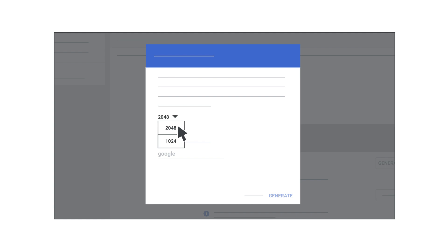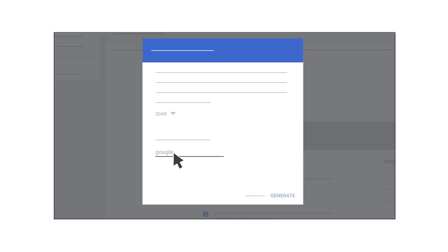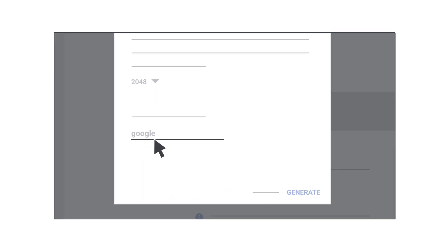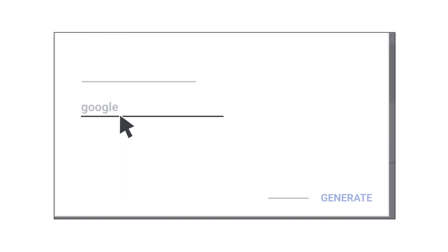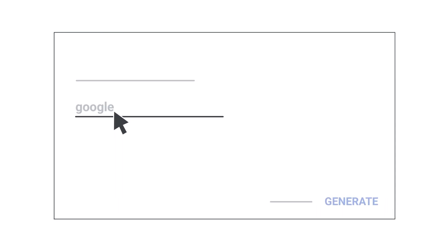Otherwise, you can select the 1024-bit key option. You're also asked for your prefix selector. Domain keys include a text string called the prefix selector, which you can modify when you generate the key. The default prefix selector for the Gmail domain key is Google. You should change this prefix only if your domain already uses a DKIM key with the prefix selector Google. After selecting your bit key length and prefix selector, click Generate to receive a DKIM key for your domain.